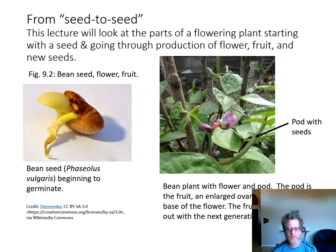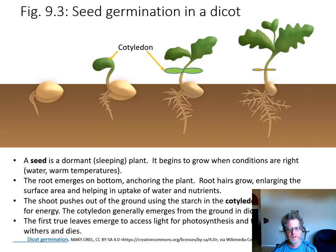Here's seed germination. Seeds always surprise me because they look dead and like they're not going to work, but we get around that by saying seeds are dormant or sleeping. If you give them water and warm conditions they'll start growing. Here's a bean seed — the root comes out first and then starts growing root hairs.